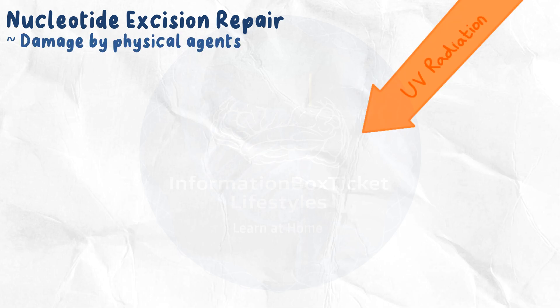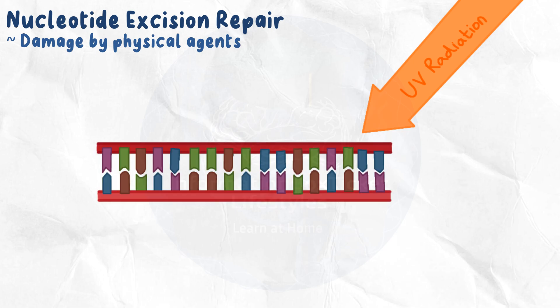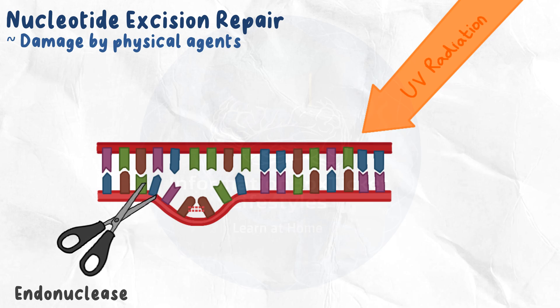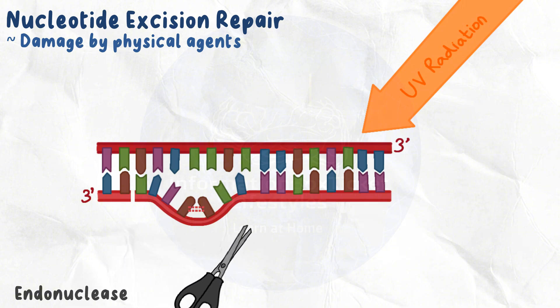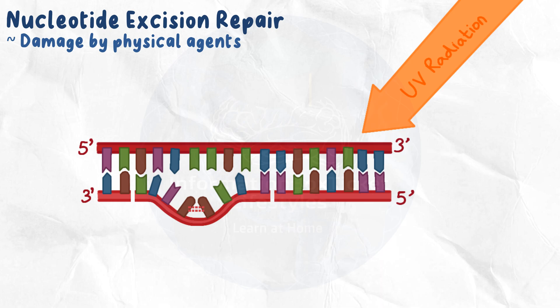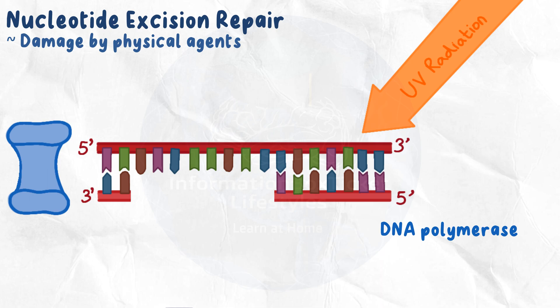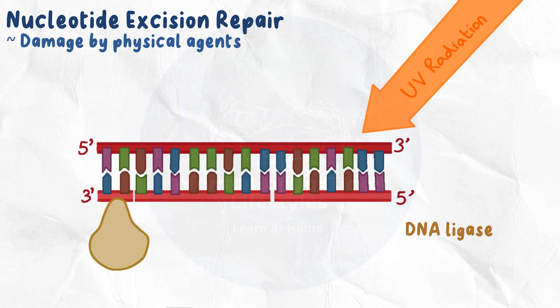Nucleotide excision repair repairs DNA damage produced by physical agents such as damaging UV radiation. UV light produces pyrimidine dimers, which are often formed between two neighboring thymines on one of the DNA strands, altering the DNA in that region. Nucleotide excision repair relies on endonucleases, which produce two incisions in the DNA strand — one on the 3' side and one on the 5' side — leaving a fragment of 12 to 24 nucleotides. Exonucleases remove these nucleotides, DNA polymerase inserts new nucleotides, and DNA ligase seals the bonds.